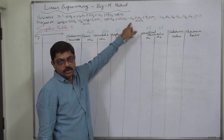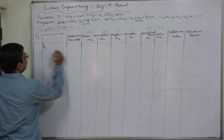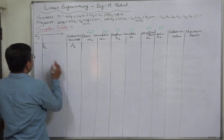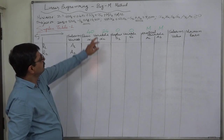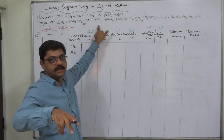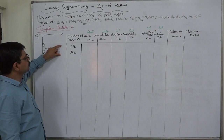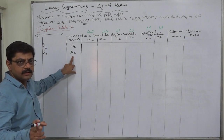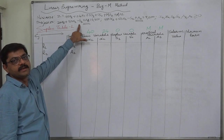In the initial solution, a1 will be the solution variable in row 1 (r1), and a2 in row 2 (r2). It can never happen that an artificial variable and a slack variable are together in any equality. Artificial variables will be alone in the equality, always paired with a surplus variable (which is negative) in the case of a greater than or equal to constraint.